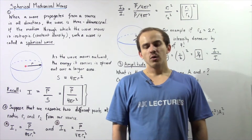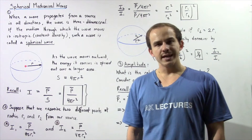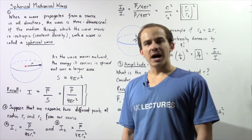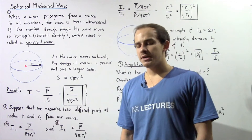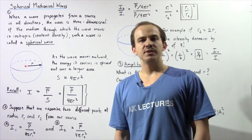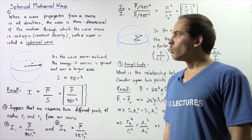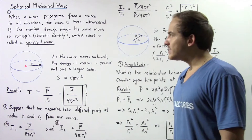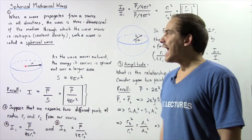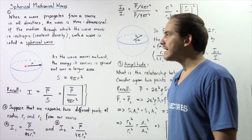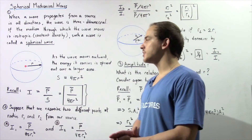A spherical wave is essentially a wave that begins at a single source point and propagates outward in all possible directions. The medium through which the wave propagates is assumed to be isotropic, meaning the medium is exactly the same in all possible directions. When a wave propagates from a source in all directions through an isotropic medium, the wave is known as a spherical wave.